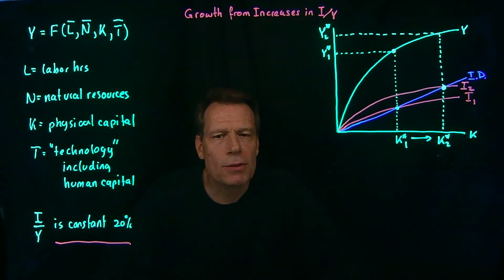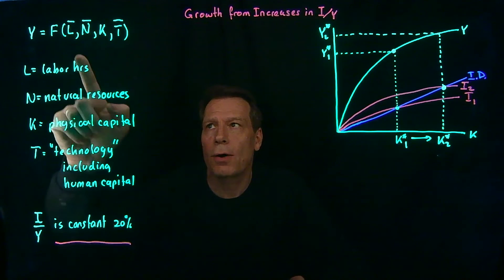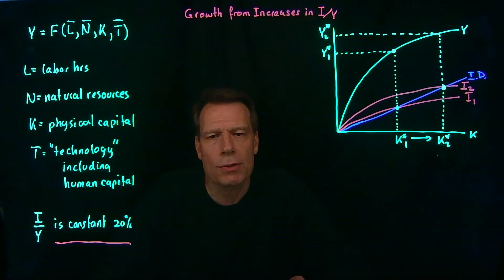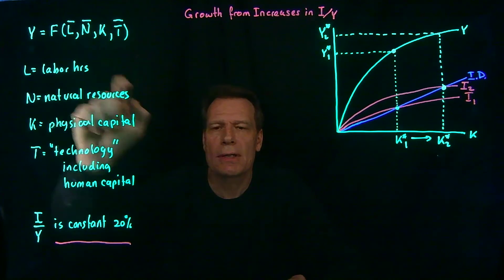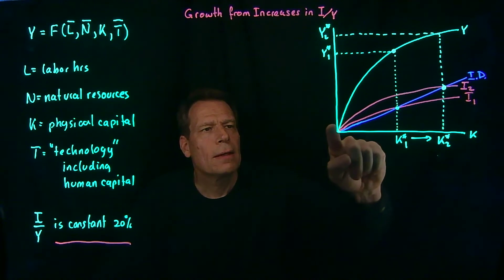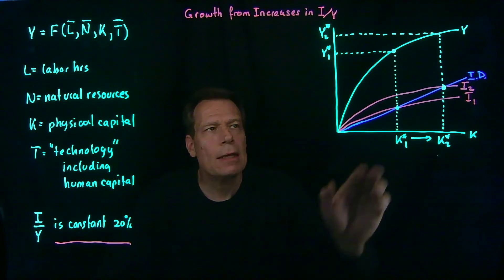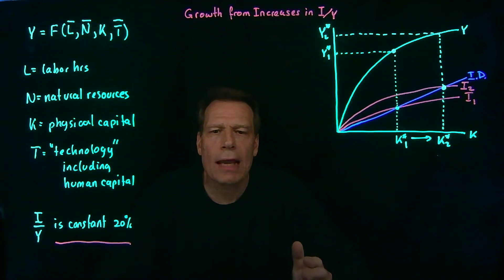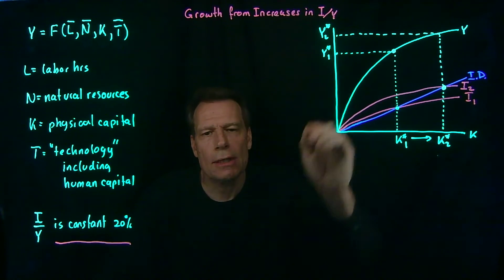We could also think about changing some other assumptions in the model. We could cause people to have more children by giving incentives for having more children and in the long run that would result in a larger labor force and more labor hours. Or we could open the borders to increased immigration and that would increase the number of labor hours. When we increase the number of labor hours that would affect the GDP curve. It would rotate up and for any level of capital we would get more GDP.